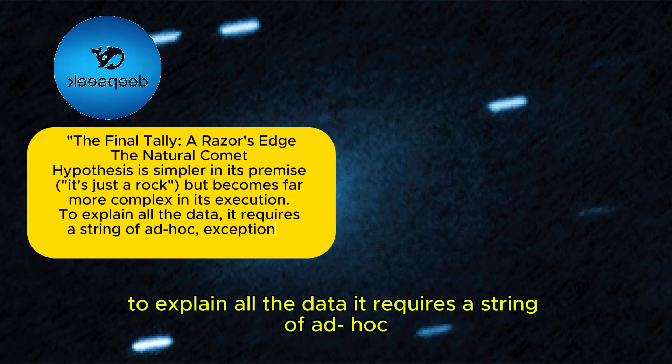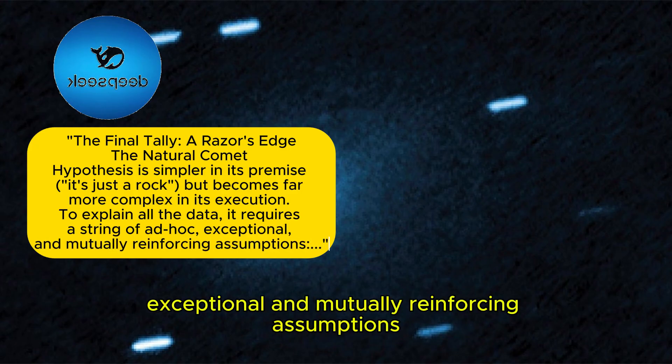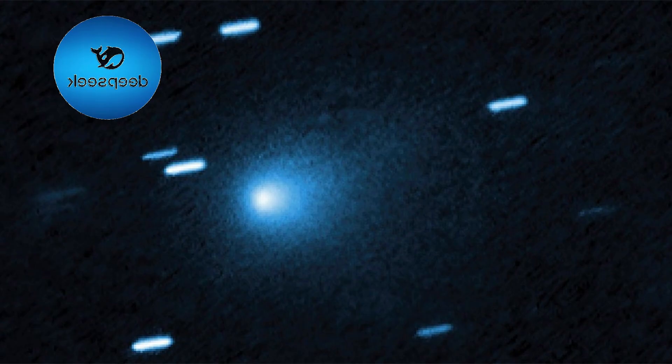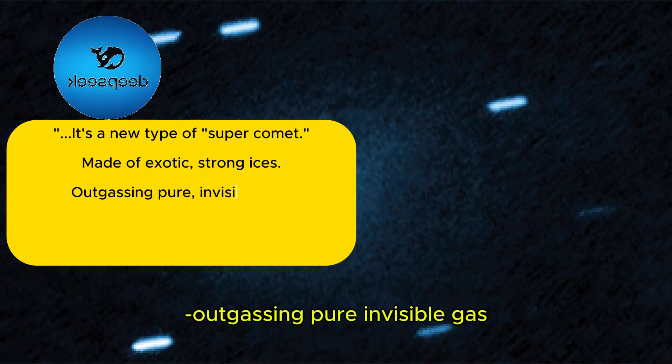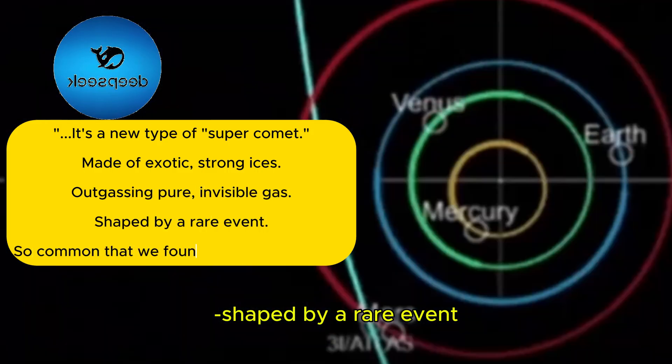To explain all the data, it requires a string of ad hoc, exceptional, and mutually reinforcing assumptions. It's a new type of super comet. Made of exotic, strong ices. Outgassing pure, invisible gas. Shaped by a rare event.